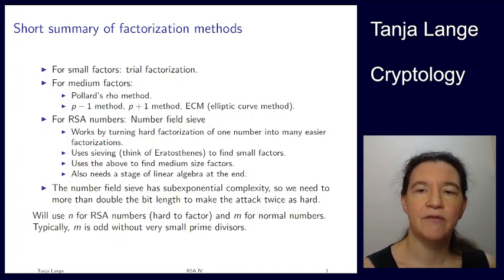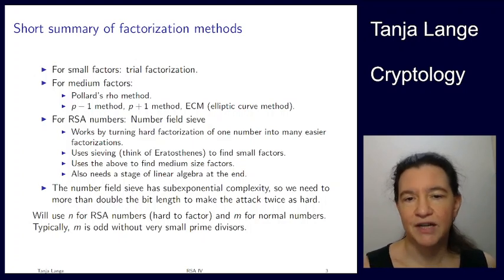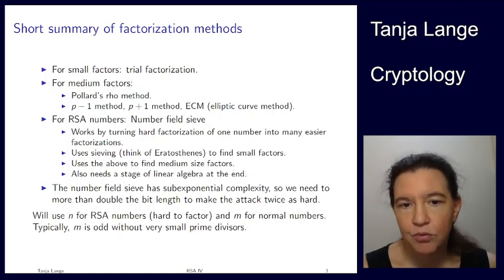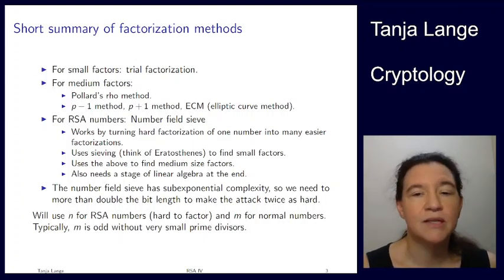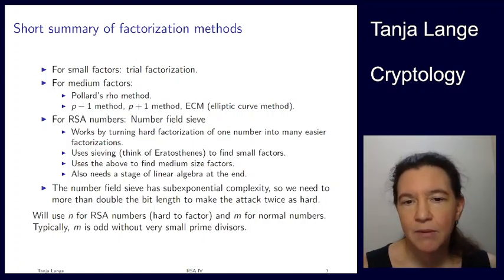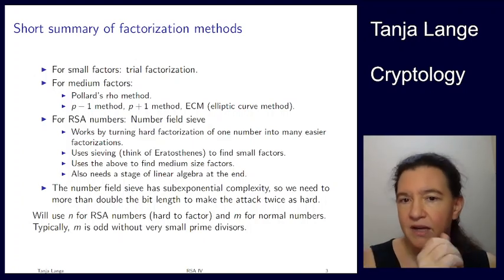This is just turning the factorization of n. I'm going to use n for the RSA numbers. These are the hard factor numbers. And I'm going to use m if I want to indicate it's a number which I need to factor. It's my target here, but it doesn't have any restrictions against being divisible by 2, 3, 5, and so on. When I look at this machinery I have here, I will be using trial factorization in order to get rid of the very small factors.